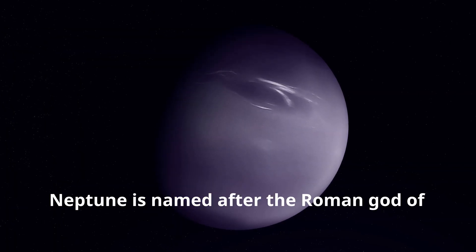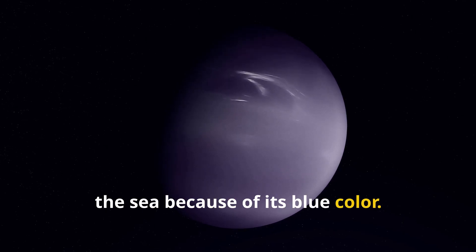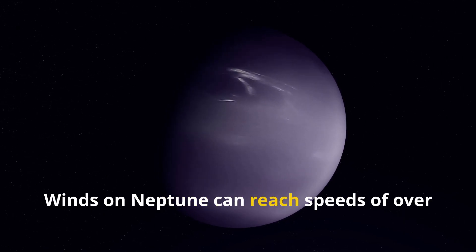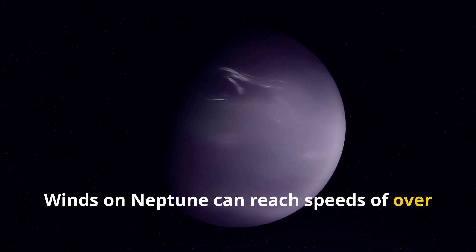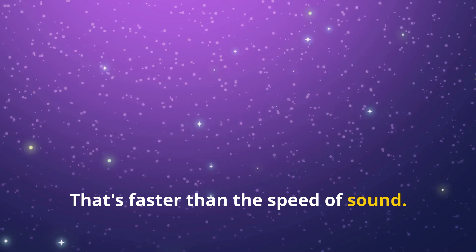Neptune is named after the Roman god of the sea because of its blue color. Winds on Neptune can reach speeds of over 1,200 miles per hour. That's faster than the speed of sound.